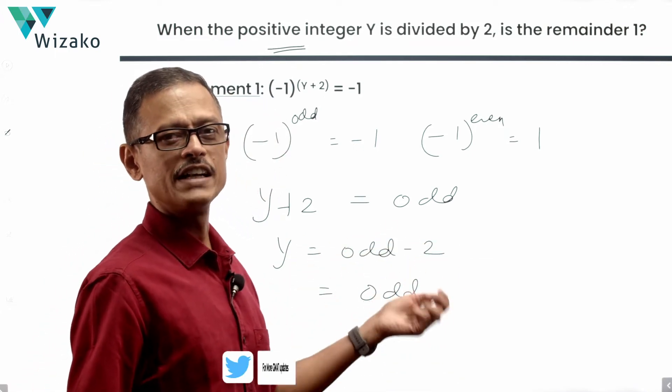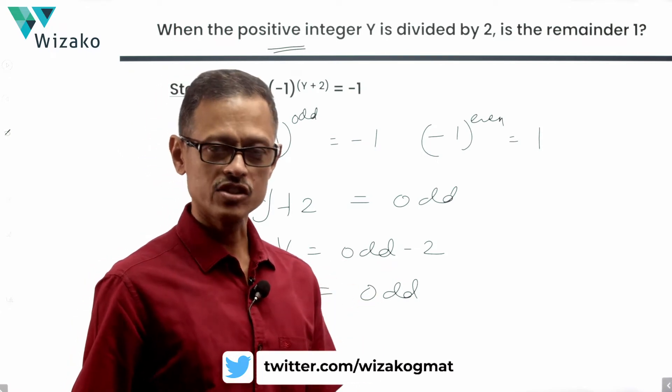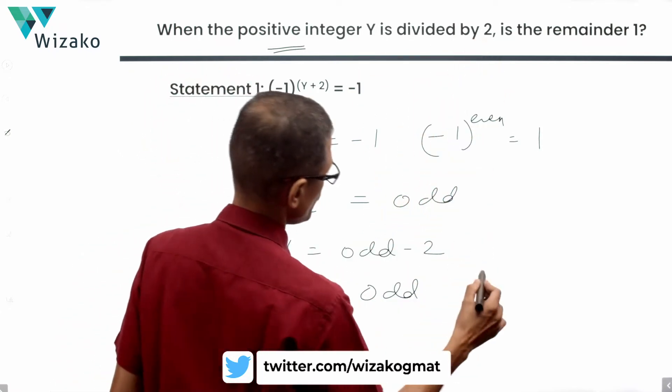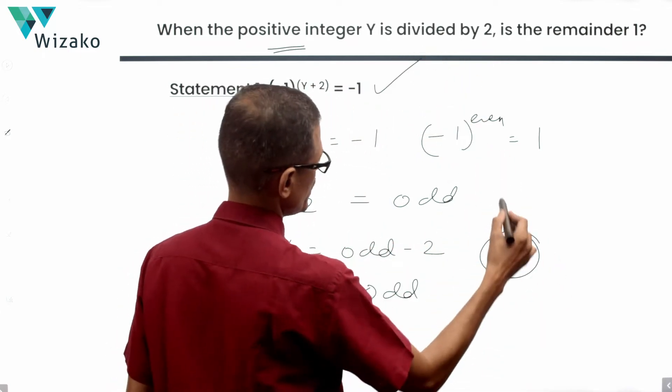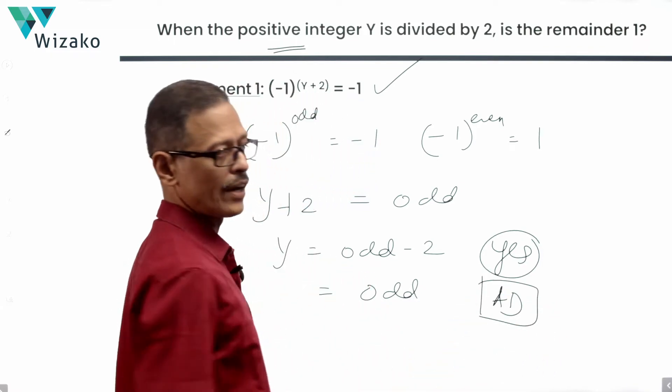If Y is an odd number when divided by 2, it is going to leave a remainder which is equal to 1. So the answer to the question is remainder 1 is a definite yes. So statement 1 alone is sufficient. If 1 alone is sufficient, we are down to answer options A or D.